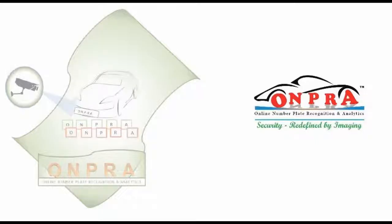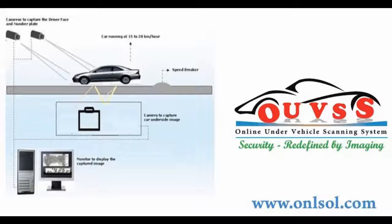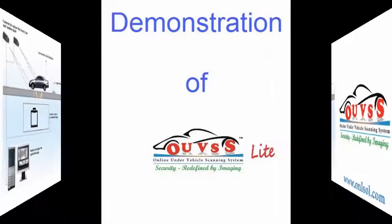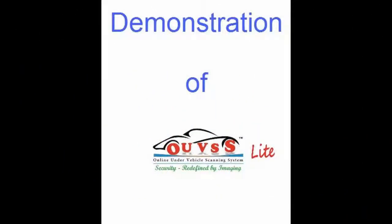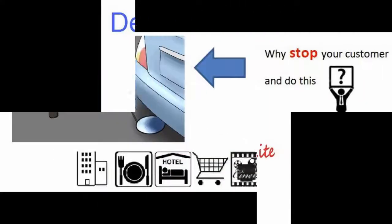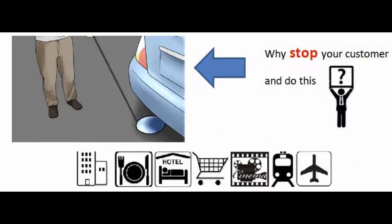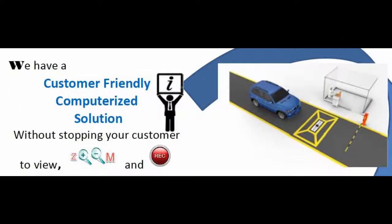Online Solutions, as a development company, introduces their own products in the high-end security market. The Online Under Vehicle Scanning System — OUVSS Lite version — is designed to replace the mirror-based checking of under-chassis of vehicles, eliminating the need to stop vehicles at entrances of malls, hotels, hospitals, train stations, airports, bus stations, restaurant parking lots, movie halls, apartments, and condominiums.